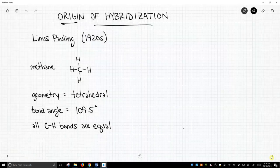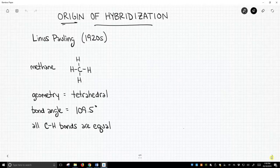Back in the 1920s, there was a scientist, Linus Pauling, a famous scientist, and he, like other chemists, knew quite a bit about the molecule methane.